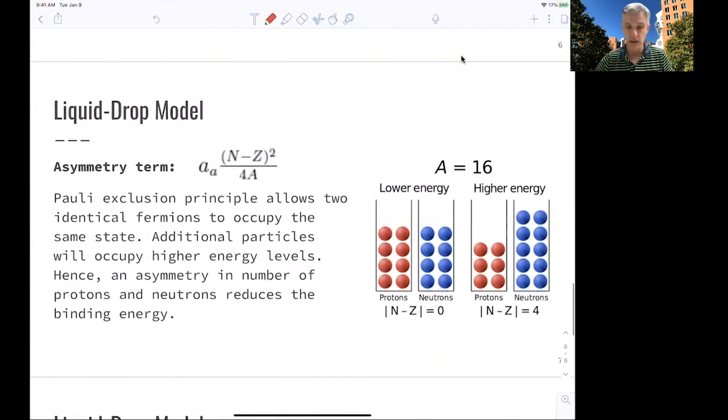All right. There's two more terms which are quite interesting. The first one is sensitive to the asymmetry between the number of neutrons and the number of protons. And it can be explained by the Pauli exclusion principle, which allows only two identical fermions, neutrons or two protons, to occupy the same energy state. So you basically fill up the energy states. Now, as is shown in this picture here, you reach the lowest energy state if the number of neutrons and the number of protons is actually the same. And you have higher energies if there is an asymmetry between those two numbers. But we have yet another term which is sensitive to the asymmetry between the number of neutrons and protons, which reduces the binding energy.